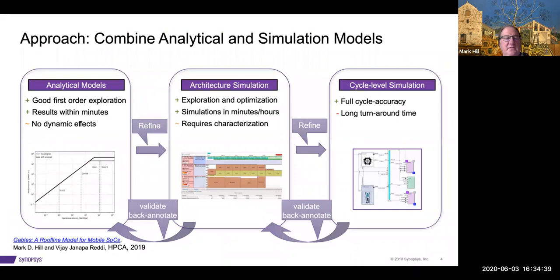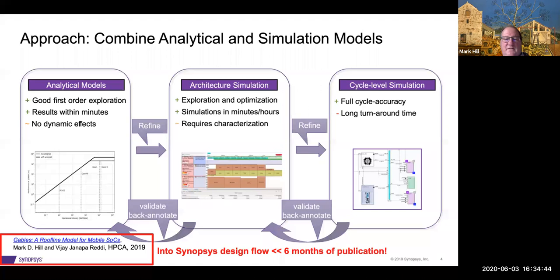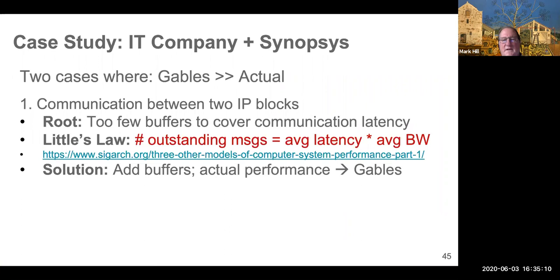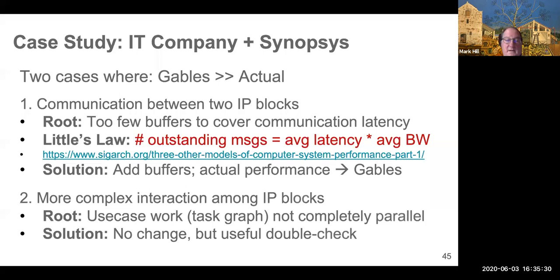This has actually been used within six months of publication. Synopsys actually included a version of Gables into their tool flow. As a double check, right? This is not a final answer. But let me give you two examples already where it helped. So there were two examples where, and this was not my work, I just heard about it, where Gables predicted a much higher number than their simulation tools. In the first case, what happened was that the root cause was there were too few buffers to cover the communication latency on one particular communication. So you weren't getting the bandwidth that Gables thought you could in the actual design. And when they changed the design to add buffers, they got performance much closer to Gables. So this was an excellent example.